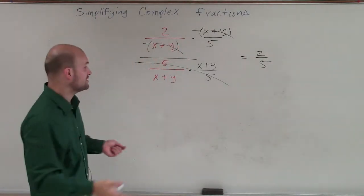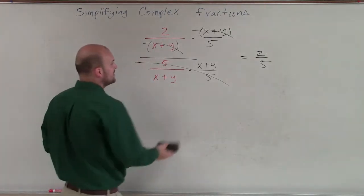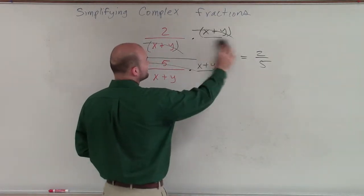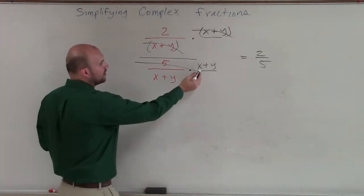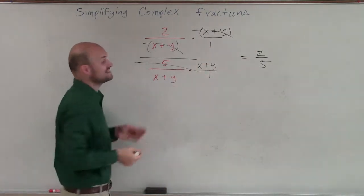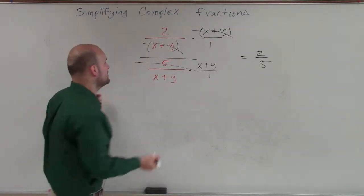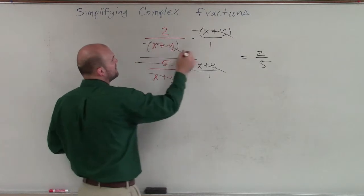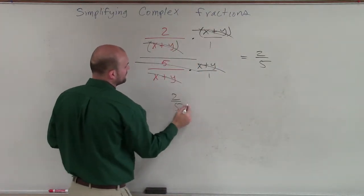Another way we could do this is you don't even need to multiply by the reciprocal. If I just multiply by x plus y on both sides — that's the LCD of our numerator and our denominator — we still know that's going to divide out to 1, and that will still divide out to 1, leaving us with 2 fifths.